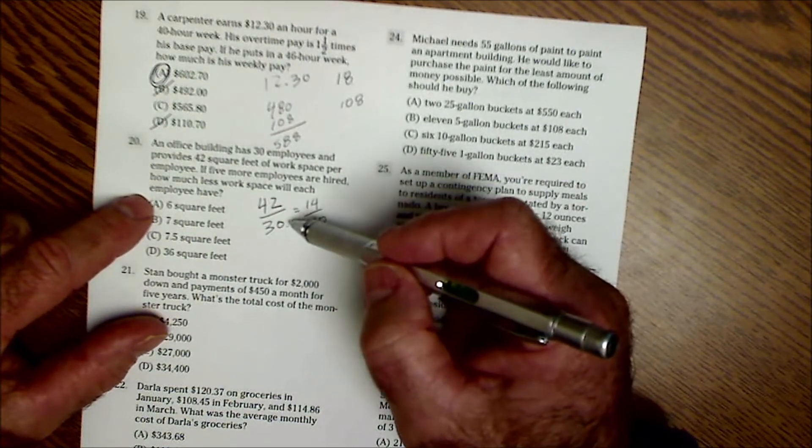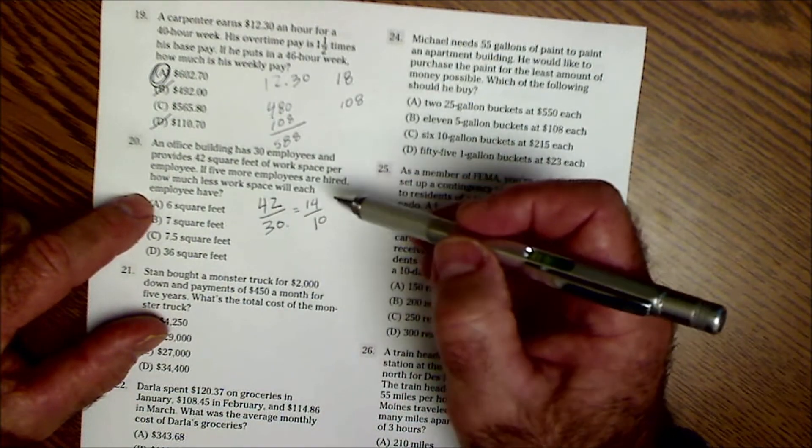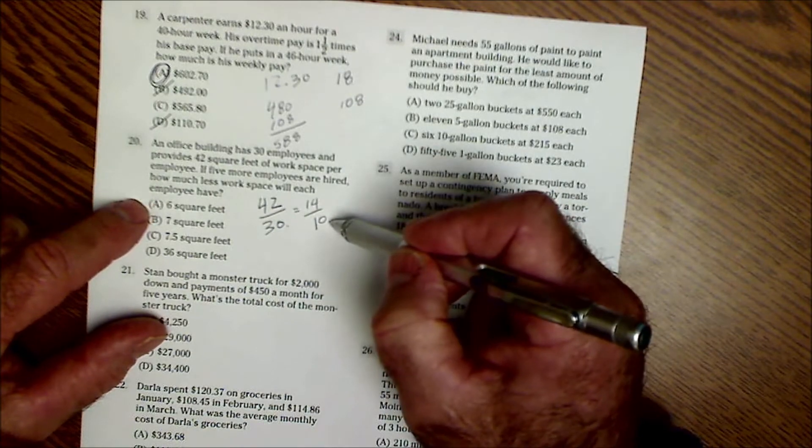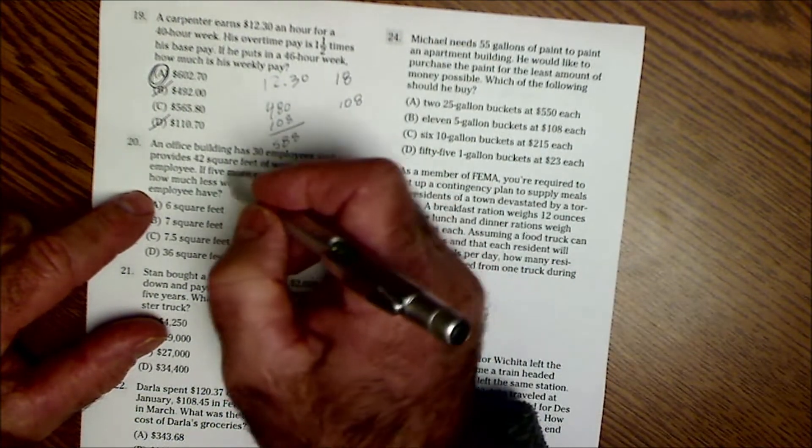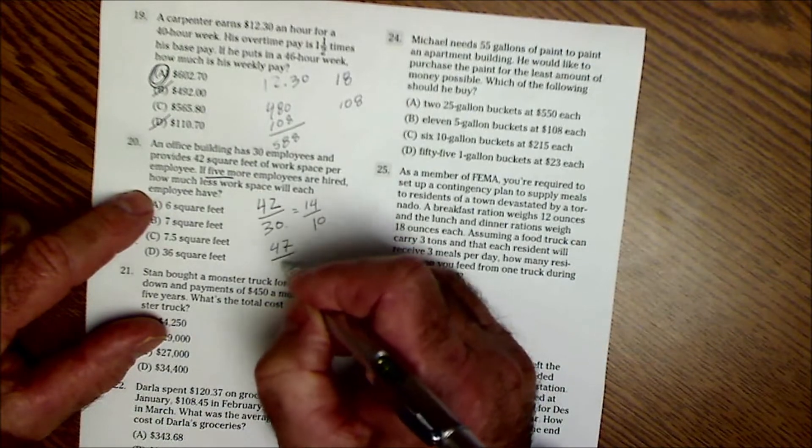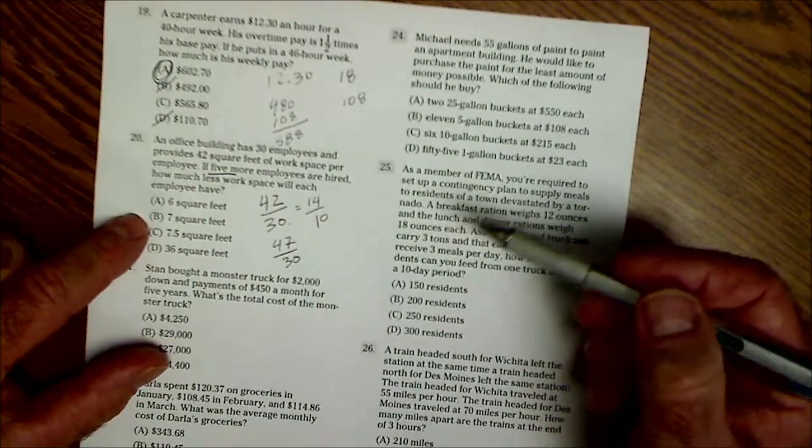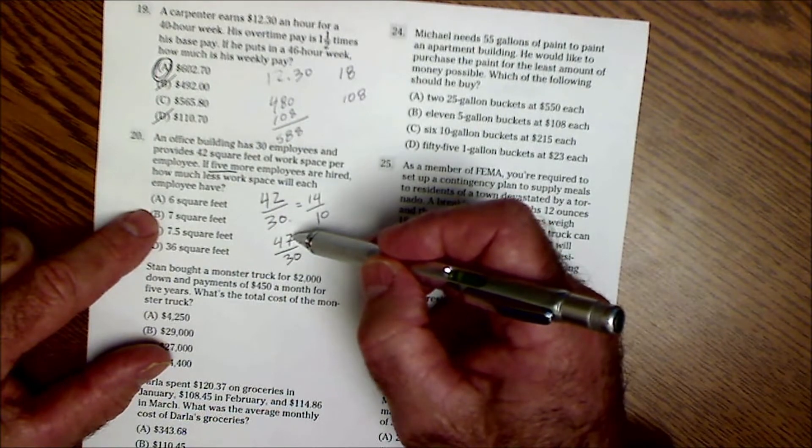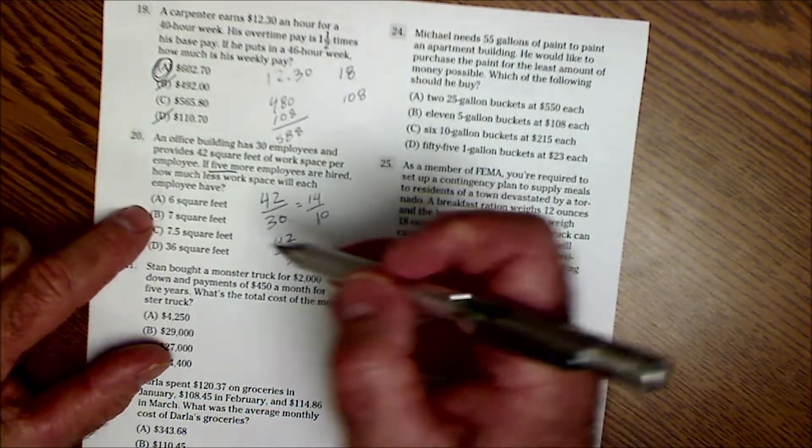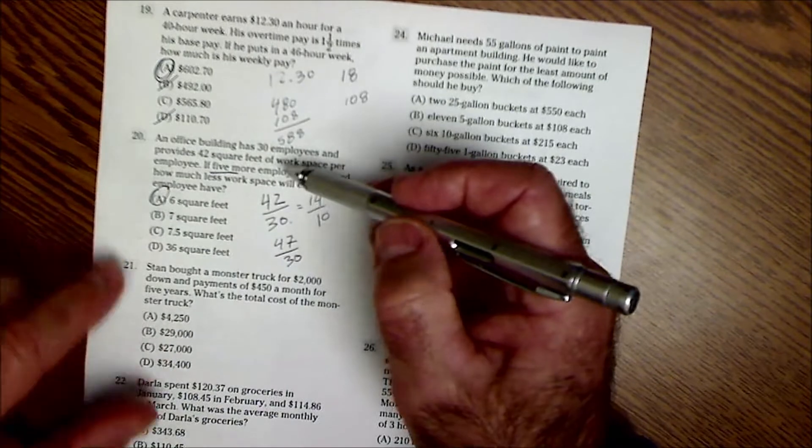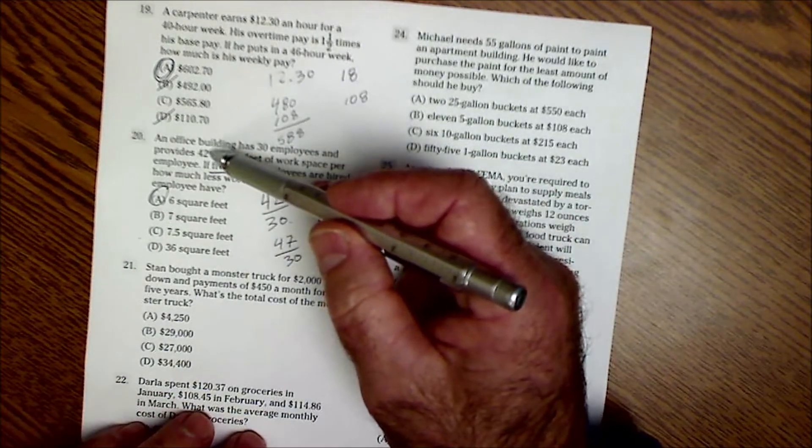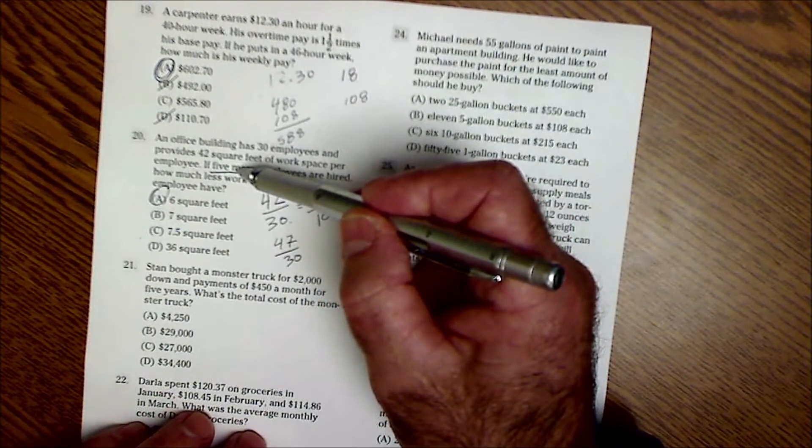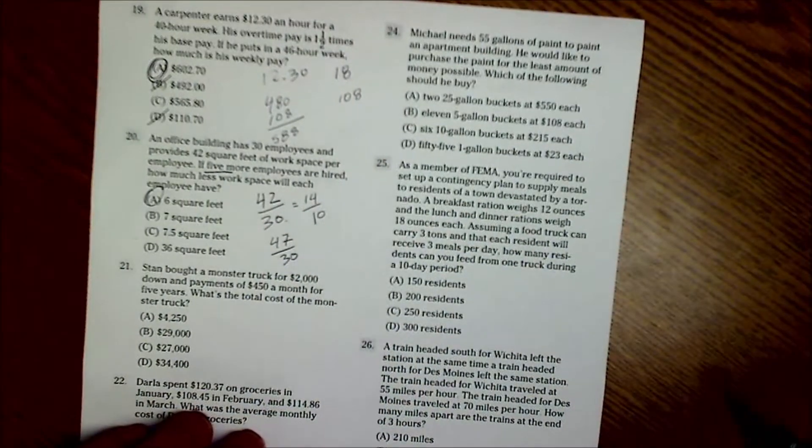Let me start with 42. I could see that's divisible by 3 to give me 14 over 10. And now there are 5 more employees. So there's 47 over 30. 5 over 30 is going to be 6. So the answer is going to be A. You don't even actually need that 42. You know there are going to be 5 more employees over 30 feet. So it's going to be 6 square feet.